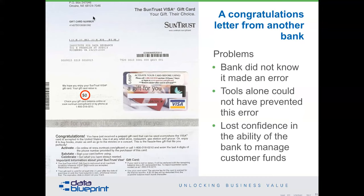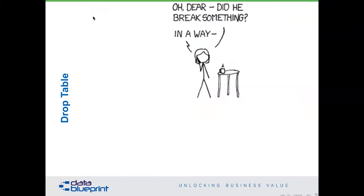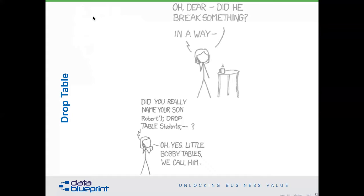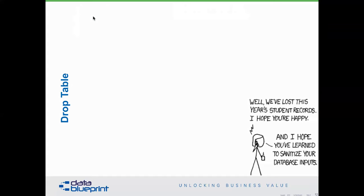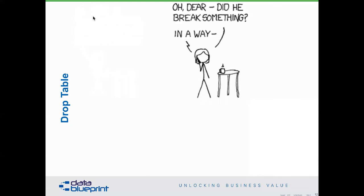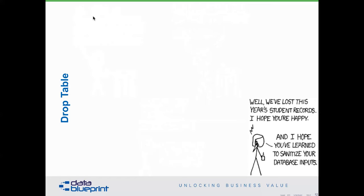Here's a little quick joke on this one. It starts out: Mom, this is your son's school. We're having some computer trouble. Mom asks if he broke something. They say, 'No, but did you really name your son Robert Drop Tables?' — 'Oh yeah, we call him Little Bobby Tables.' 'Well, we've lost this year's student records. I hope you're happy.' And Mom says, 'Yes, and I hope you've learned to increase the quality of your database inputs.'